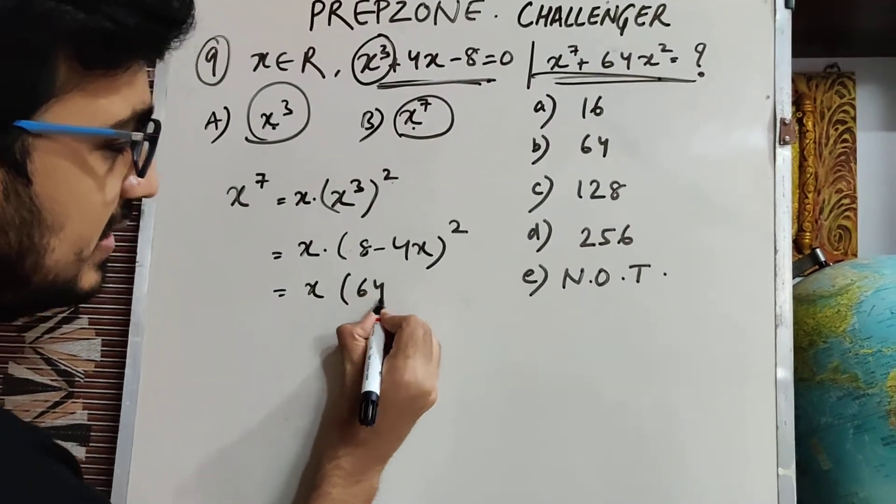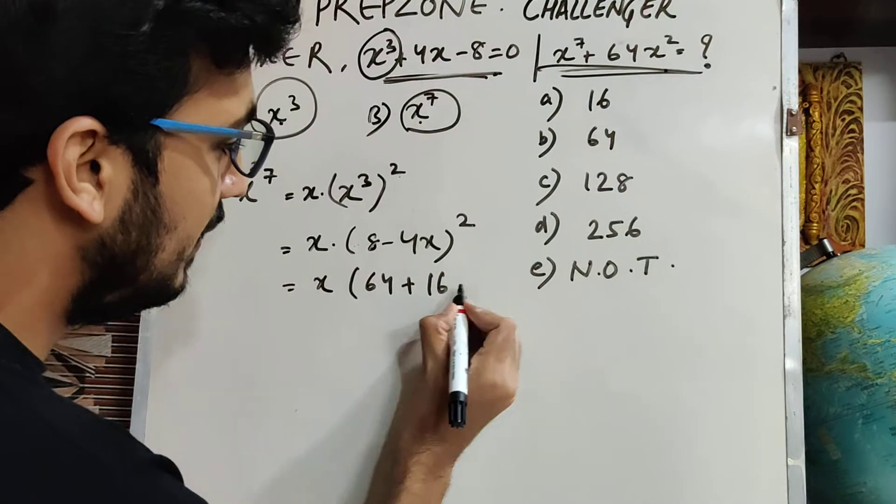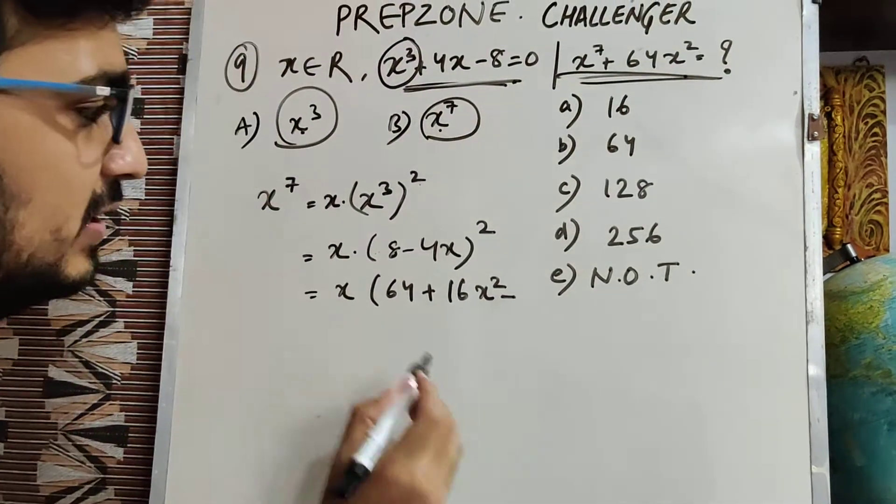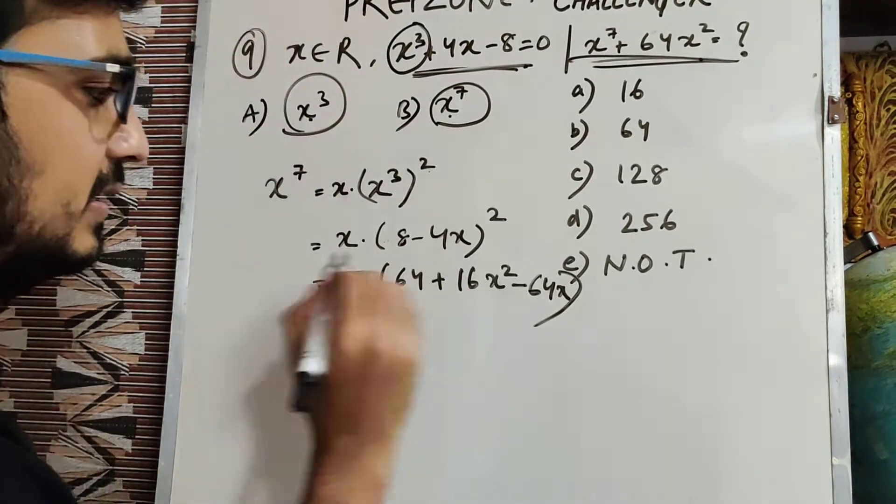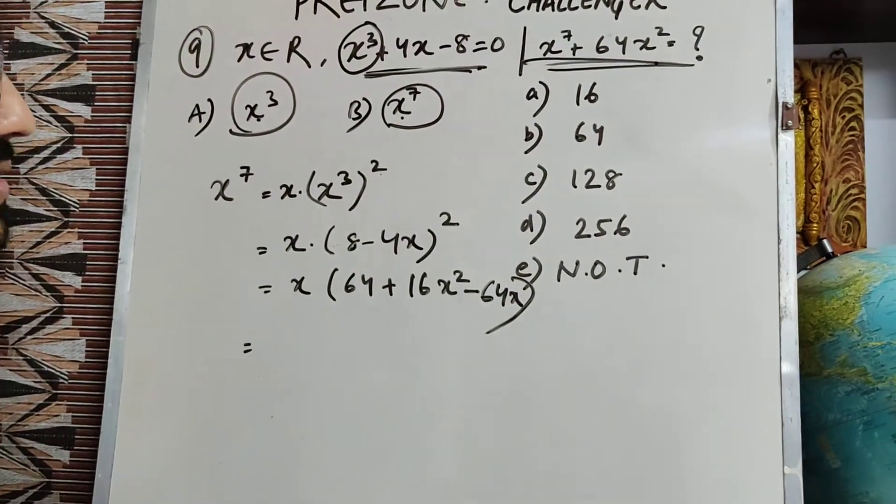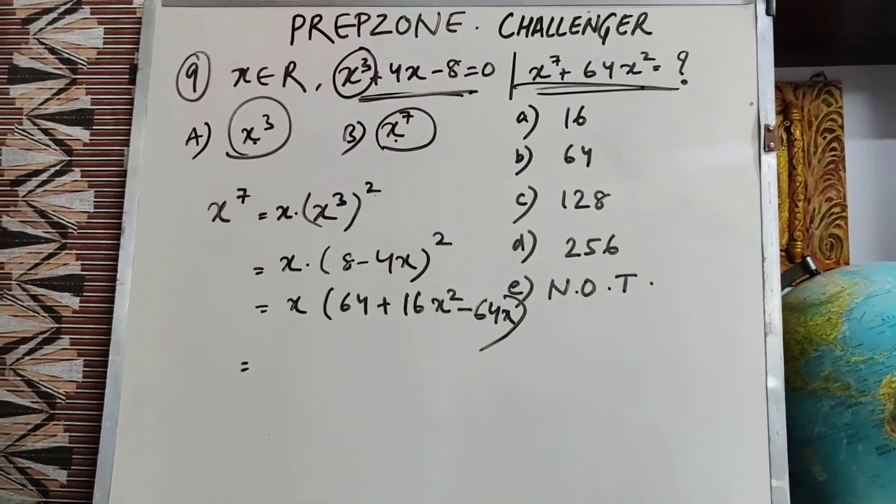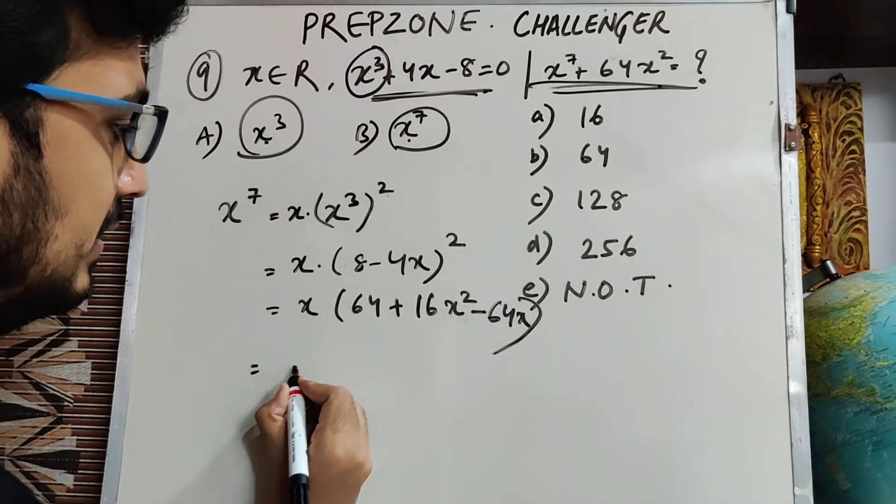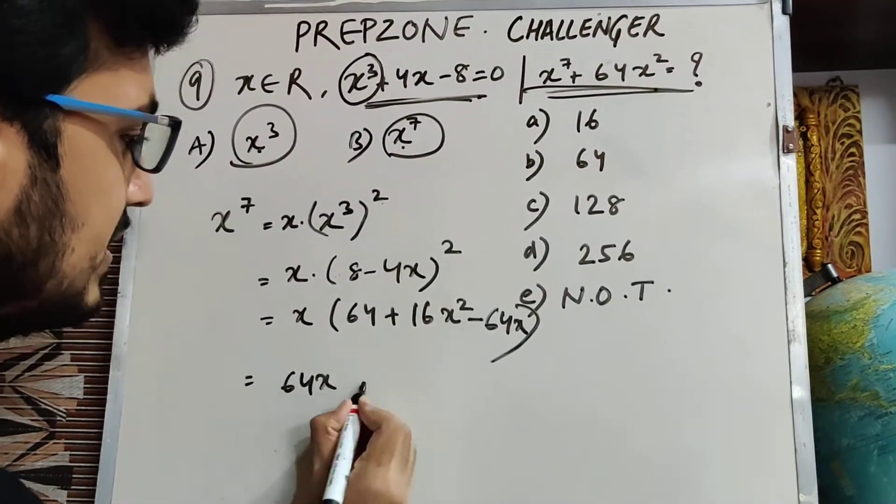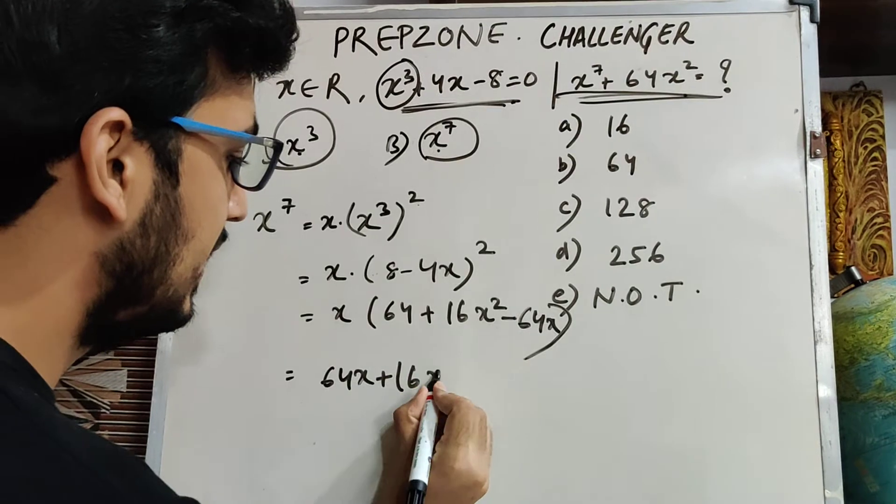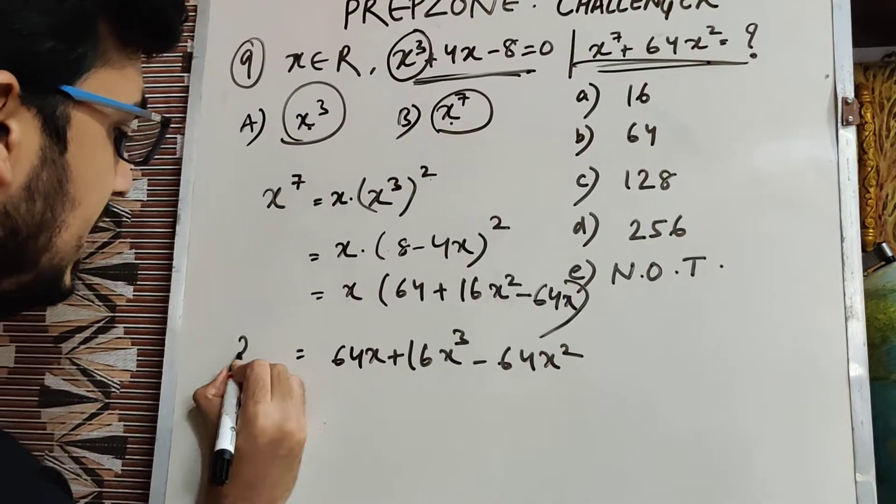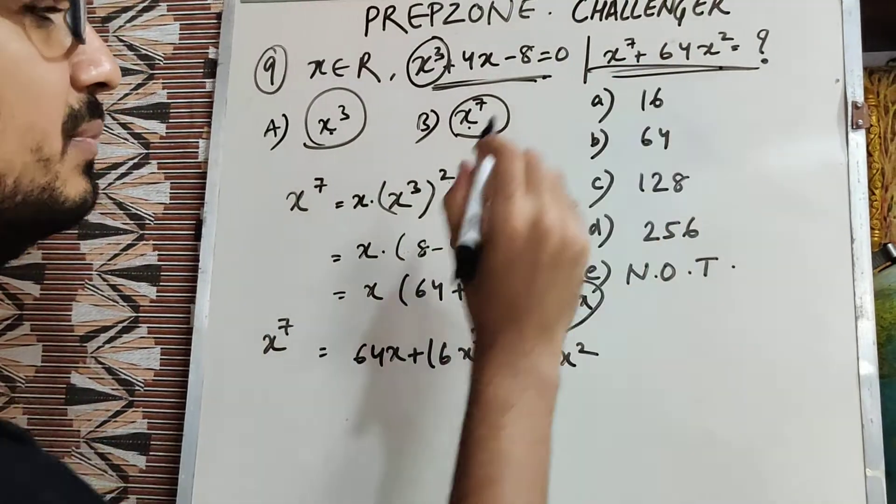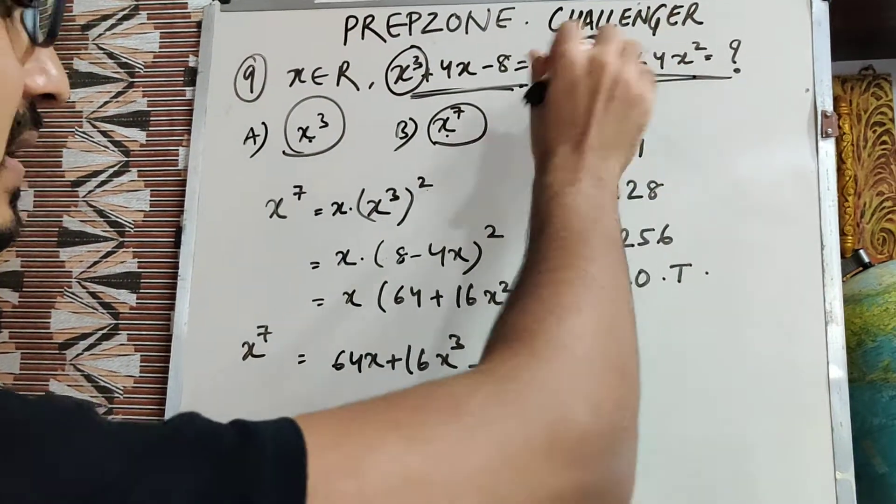This is (A - B)² which is A² plus B² minus 2AB. How much? 64x, right? This is the value. Let us simplify. What is your value? This becomes 64x plus 16x³ minus 64x², right?